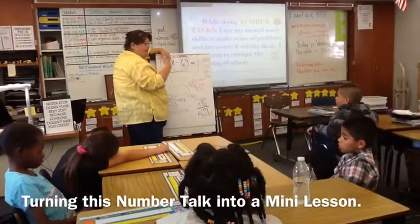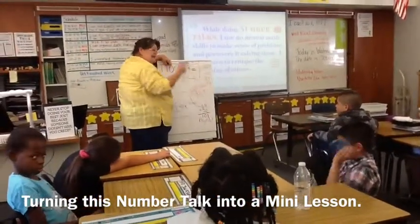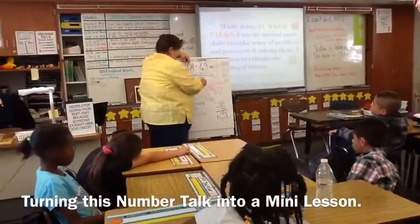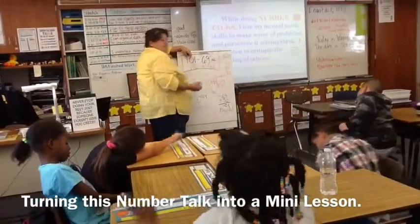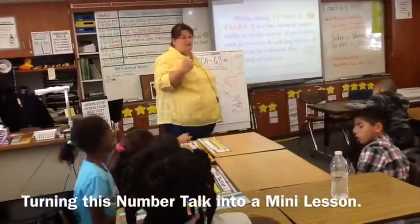Because I know 2 minus 0 is 2, and I know that 12 minus 7—10 minus 7 is 3. So that's how I would have done it.